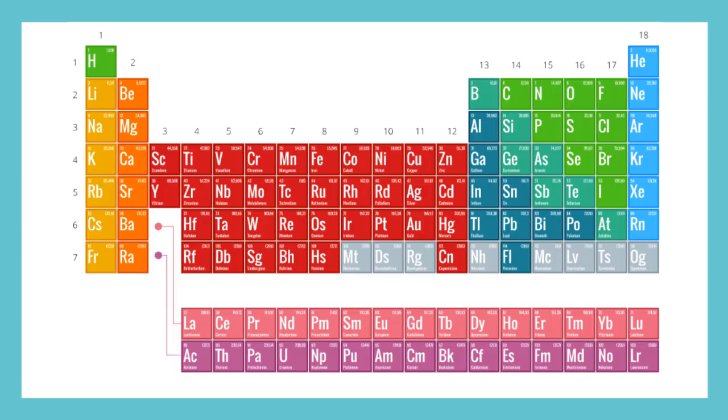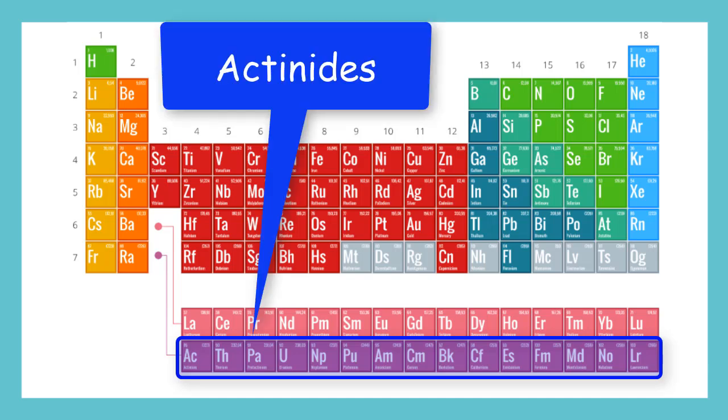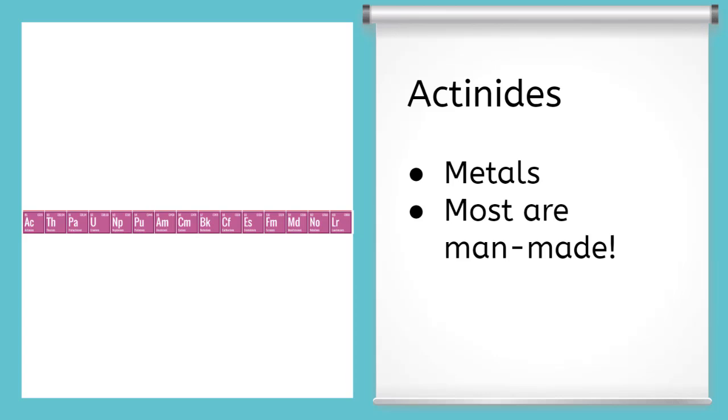Now, if we move below to the purple boxes, we will see that these belong in period 7. We call this group of elements the actinides. The actinides are found in the very bottom of the periodic table. And they also fall into the metal category. But most of them are man-made. That means they were created in a laboratory and cannot be found naturally on earth.